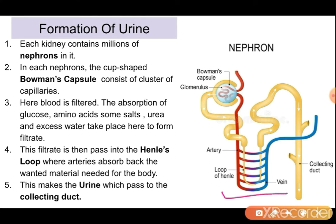Now let's learn about the formation of urine in the kidney. Each kidney is composed of millions of nephrons. These nephrons are known as the filtering unit or excretory unit. Each nephron is composed of a cup-shaped Bowman's capsule, and inside this Bowman's capsule there is a glomerulus surrounded by capillaries. Here in the Bowman's capsule the filtration process takes place — absorption of excess glucose, amino acids, salts, urea, and excess water from the blood, making the filtrate. This filtrate is then passed on to the Henle's loop, where it is again surrounded by a network of arteries and veins. Arteries reabsorb the wanted material needed for the body, and this makes the urine.